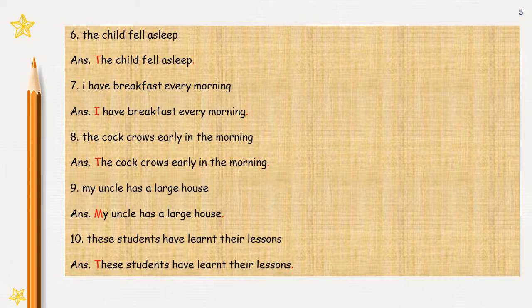Next is: my uncle has a large house. M capital — my uncle has a large house — M capital, and at the end of the sentence, put a full stop. Last is: these students have learnt their lessons. In the answer, you will write T capital, H-E-S-E small — students have learnt their lessons — all in small letters. Only T is to be made capital, and then at the end of the sentence, full stop.